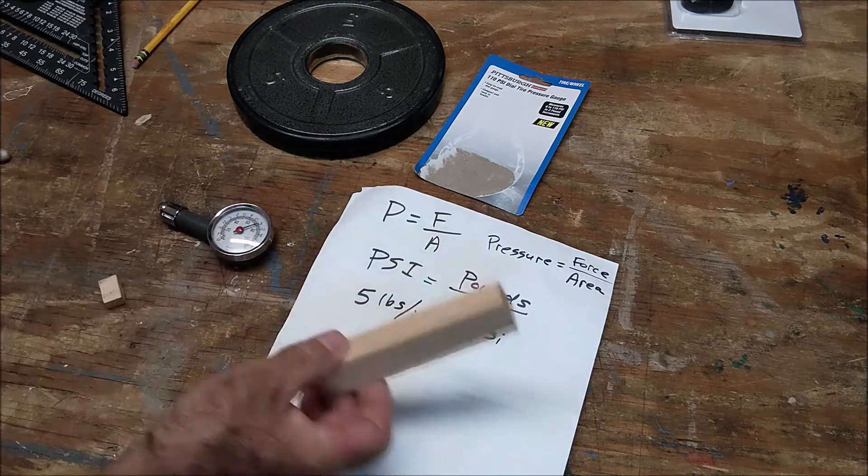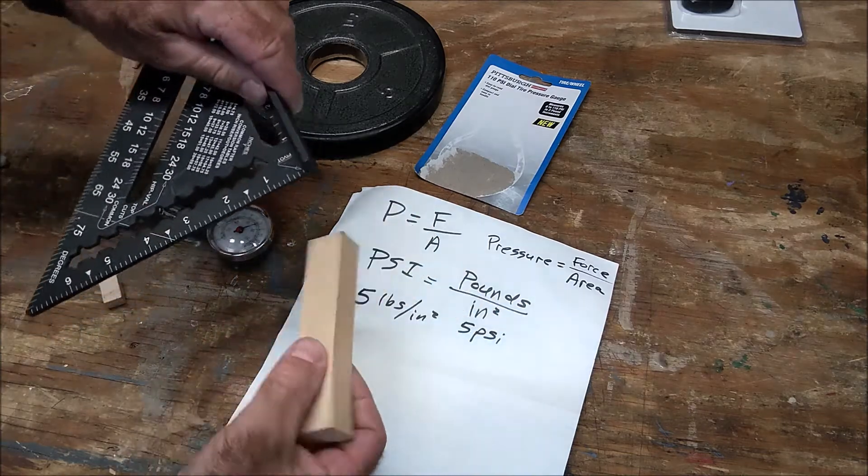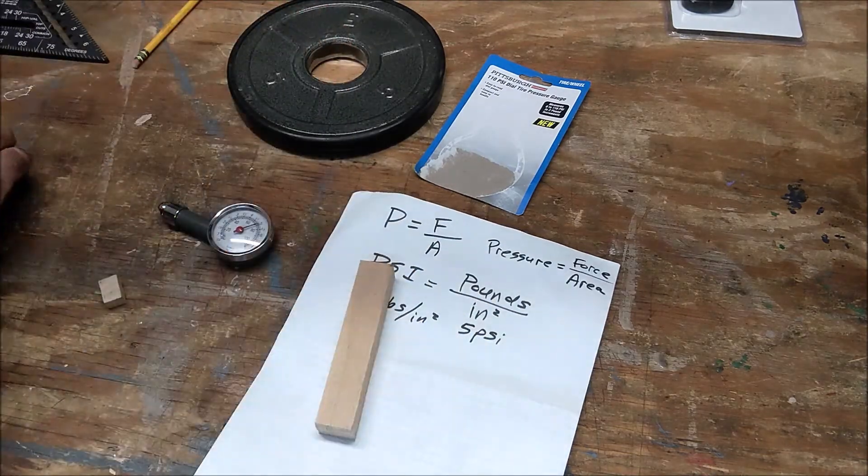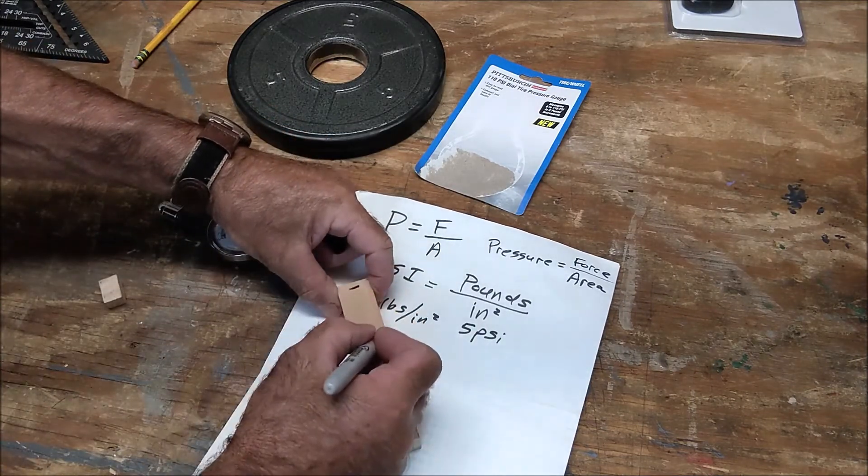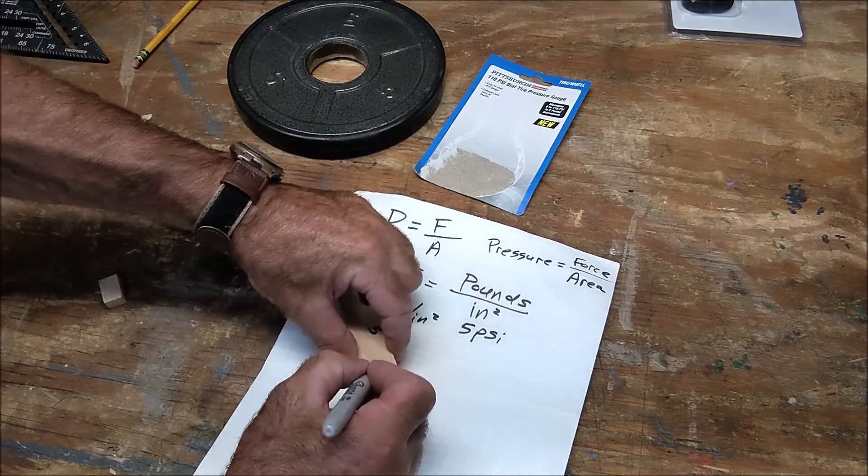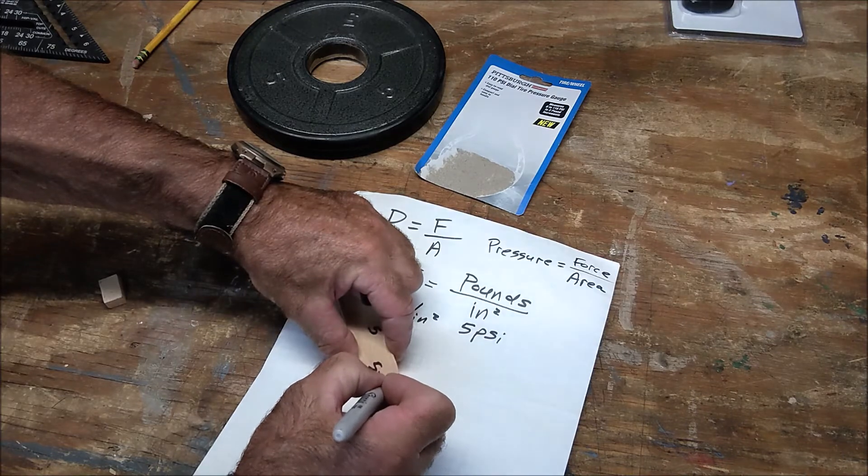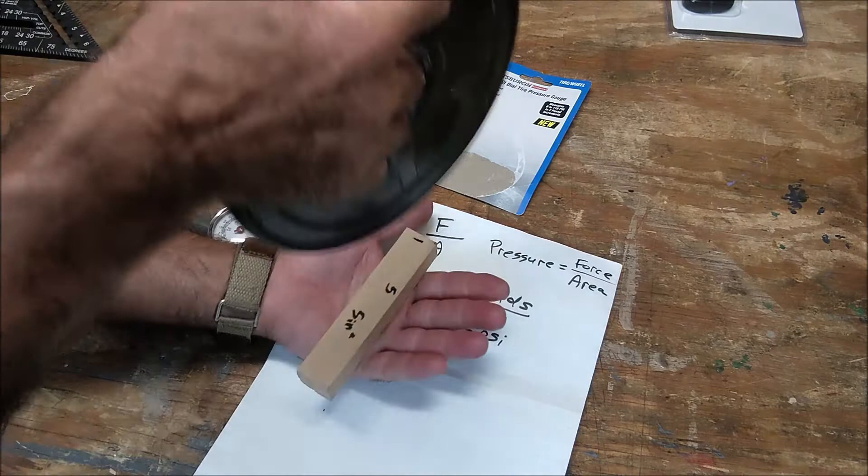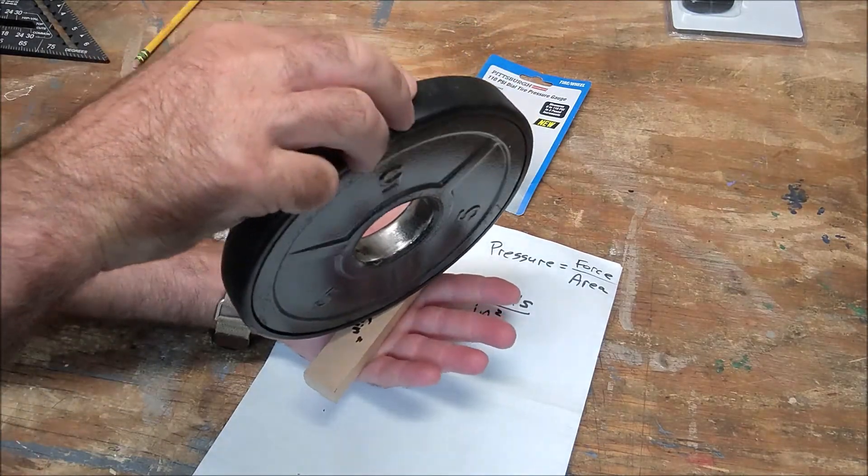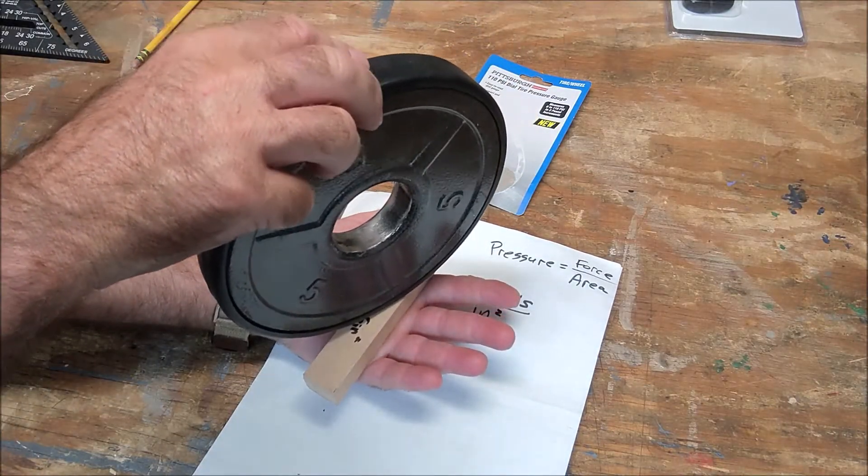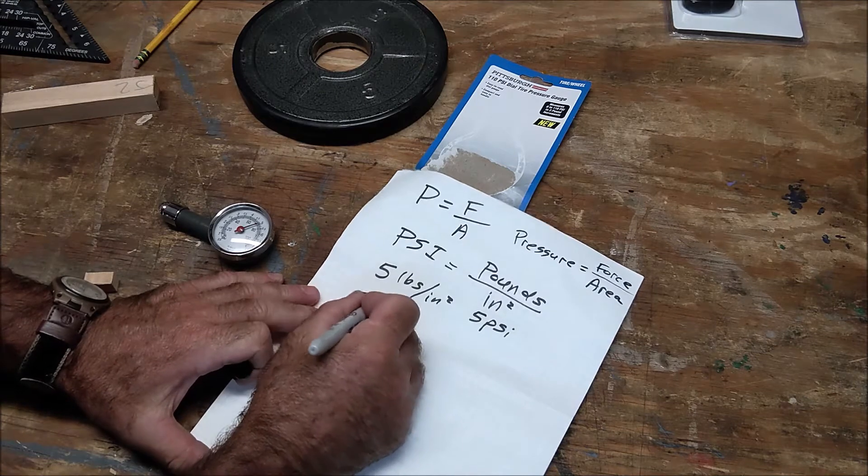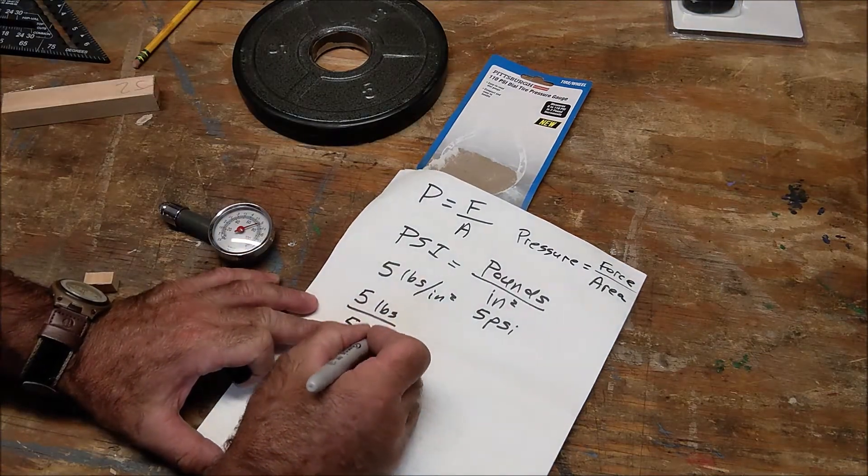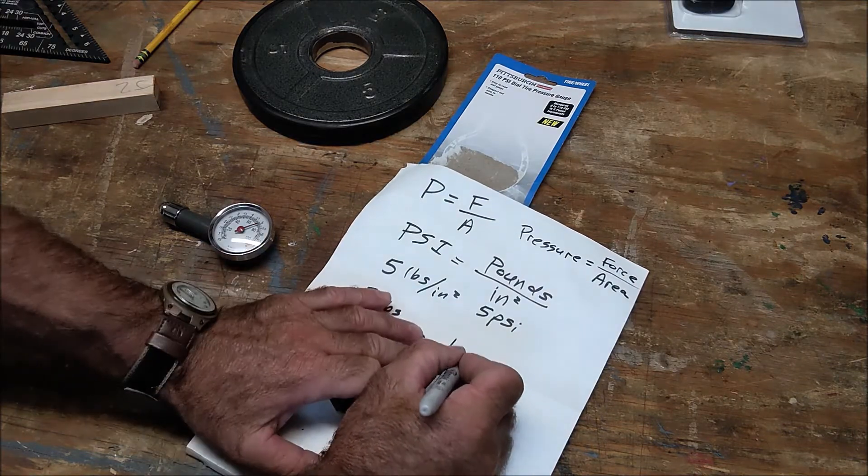If I took a bigger block let's say this block right here is one by five. I found its area by doing base times height one times five is five square inches. I put that on my hand and now I have five pounds per five square inches. I have five pounds per five square inches five divided by five is one and I have one psi.